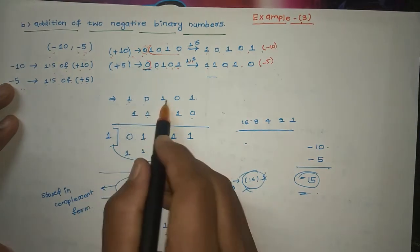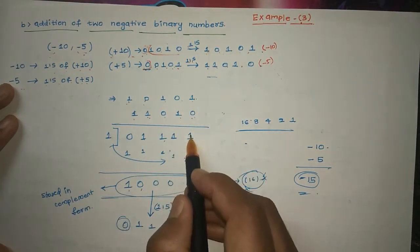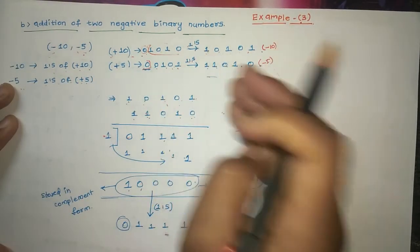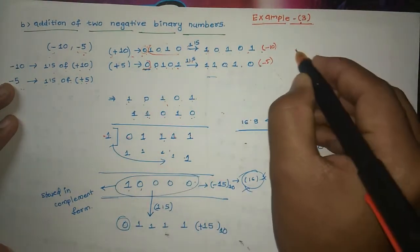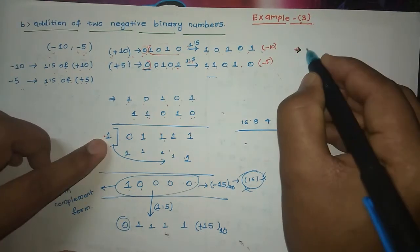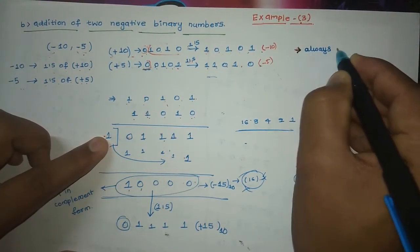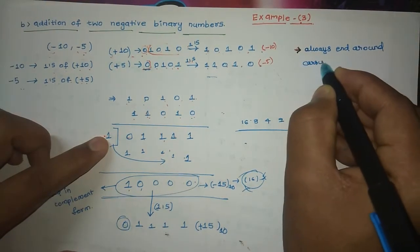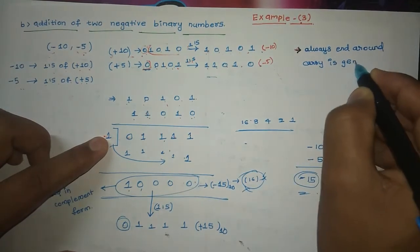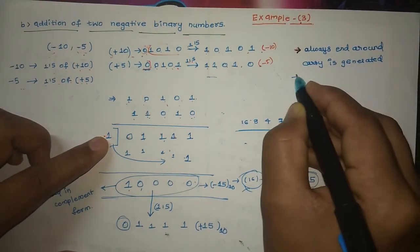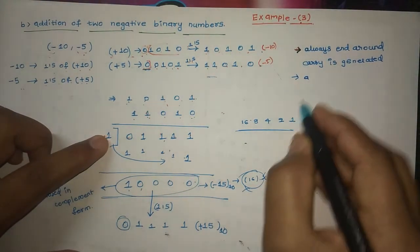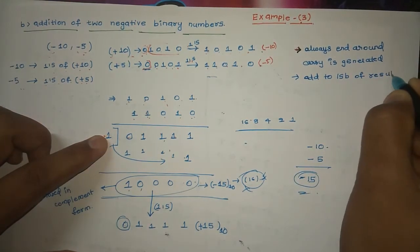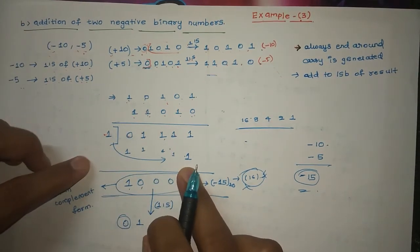The addition of 1 1 0 1 0 and 1 1 1 0 1 0 gives 1 1 1 1 0 with a carry. When you add two negative numbers, a carry will always be generated. This is called the end-around carry. The end-around carry is added to the LSB of the result to adjust it.